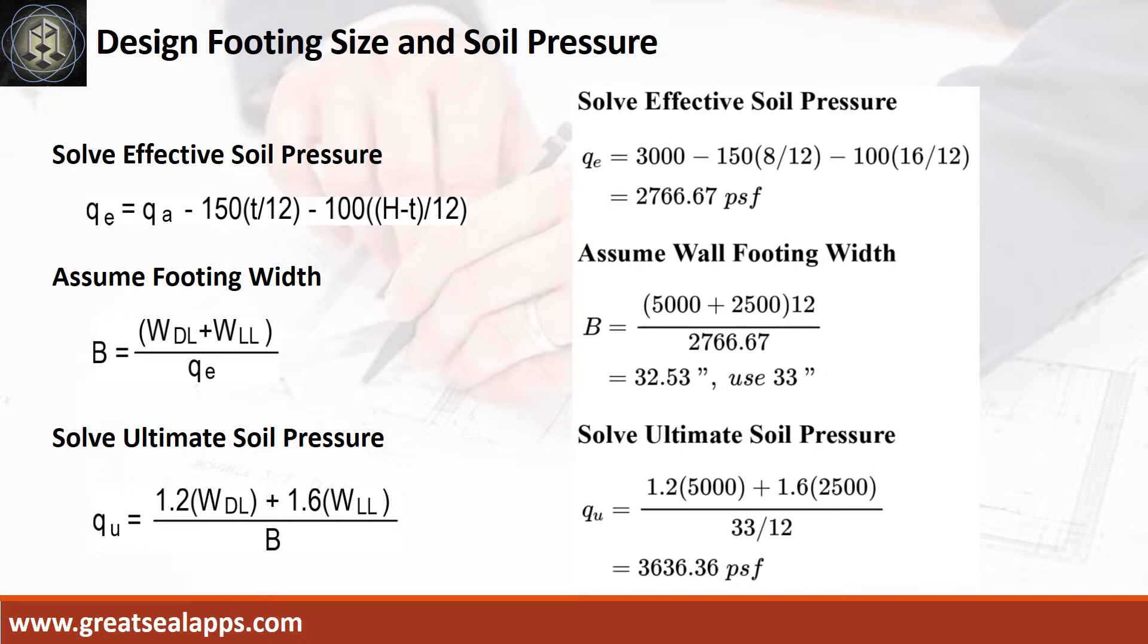Given uniform dead load of 5,000 pounds per foot and uniform live load of 2,500 pounds per foot, the assumed footing width is 33 inches, and the ultimate soil pressure is 3,636.36 PSF.